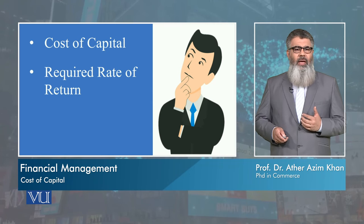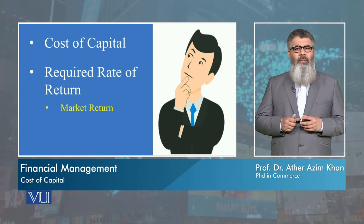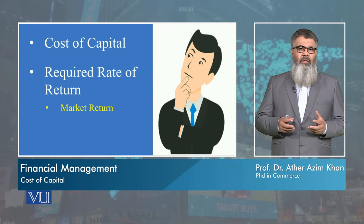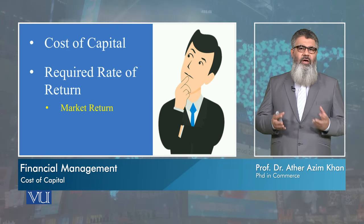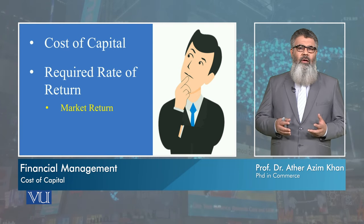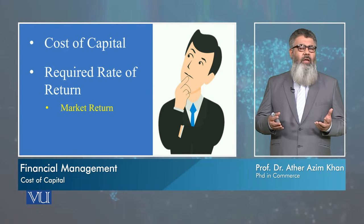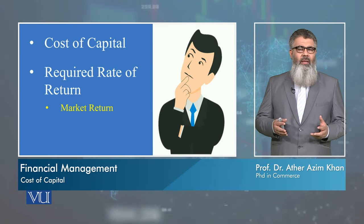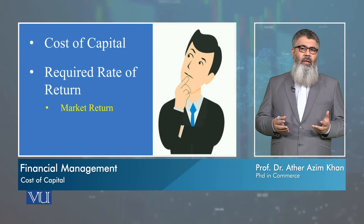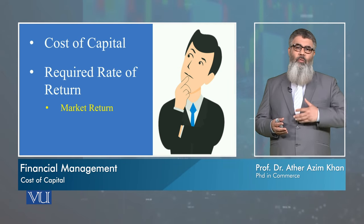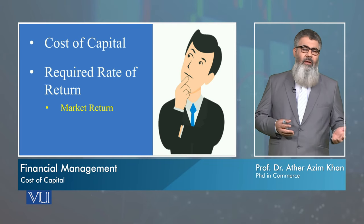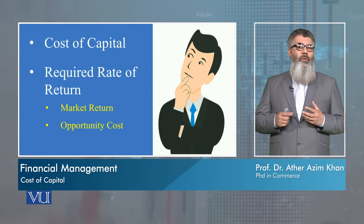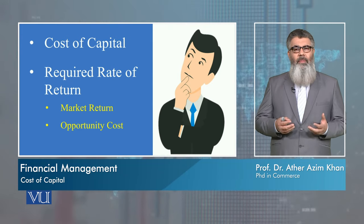Let's see what happens. First of all, the market rate of return — which is the average market return — is used as the required rate of return. This is the easiest and most common way to calculate the required rate of return. And as mentioned, this is what becomes the cost of capital for the company. The second way may be the opportunity cost of capital or funds.